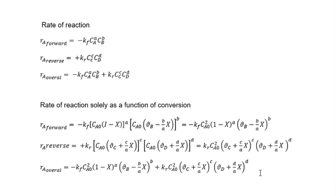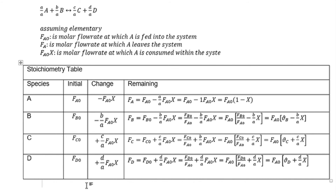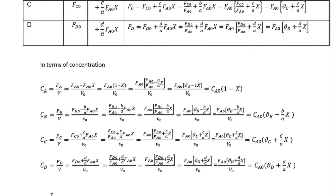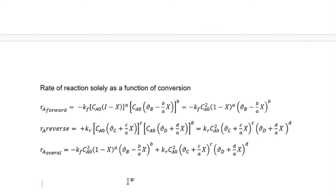For the batch reactor, I hope that makes sense. Let's do the same thing for a continuous stirred tank reactor. The stoichiometric table is the same format — the only difference is that instead of N we use F. In terms of concentration, the format is very similar, and we arrive at the same answer. The reaction rate law does not change since we are dealing with the same reaction, A plus B to give C and D, and it's elementary. We still get the same rate of reaction solely as a function of conversion.